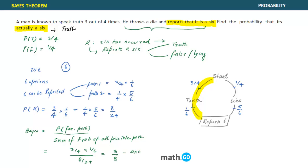So the answer is (3/4 × 1/6) divided by (8/24), which gives us 3/8. This is the answer we mark in the exam. Drawing the diagram makes it crystal clear what is being asked in the question.